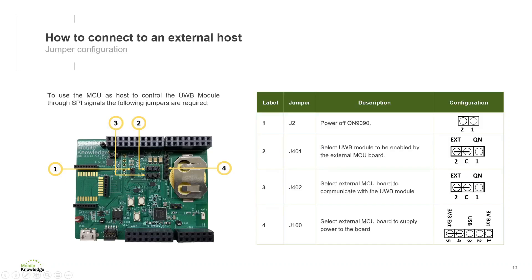To configure the Shield 2 to allow the external host to control the UltraWideBand module through SPI, the following jumpers need to be configured. The J2 needs to be removed as the QN1990 will be powered off. The J401 jumper needs to be set in position 2C because it is selecting the UltraWideBand module to be enabled by the external MCU port. The J402 jumper needs to be set in position 2C as well to route the signals required for communication with the UltraWideBand module to the Arduino pin header. Finally, the J100 will be set to position 4-5 to select the external MCU port to supply power.